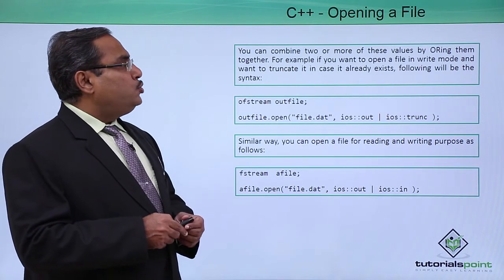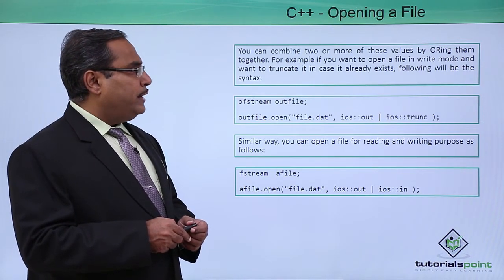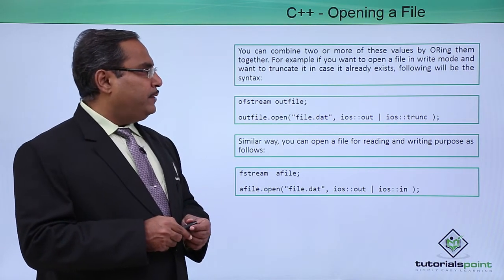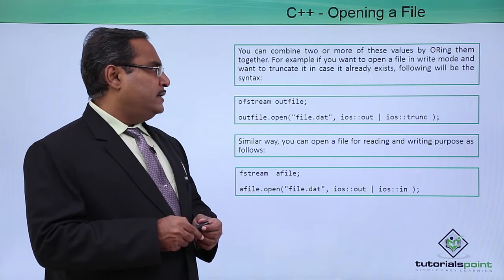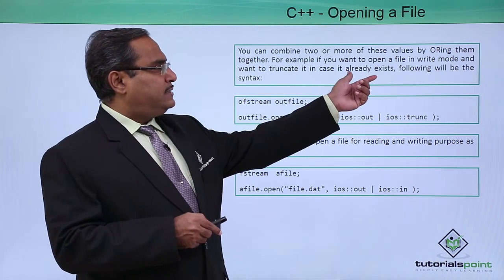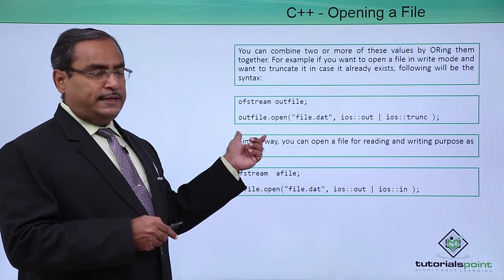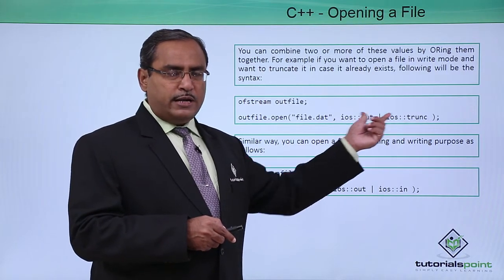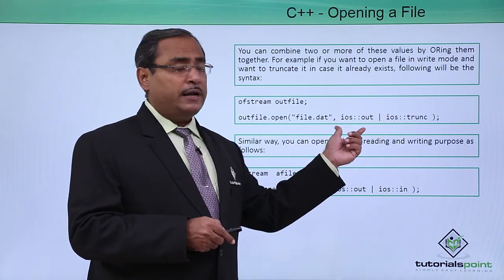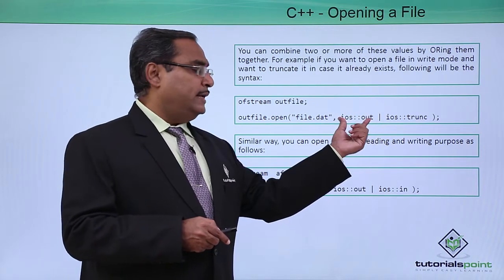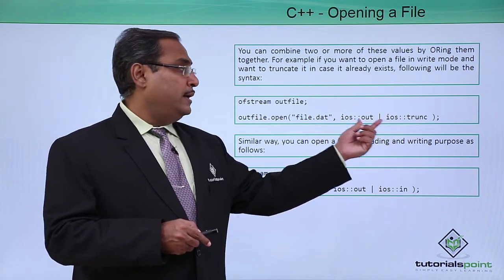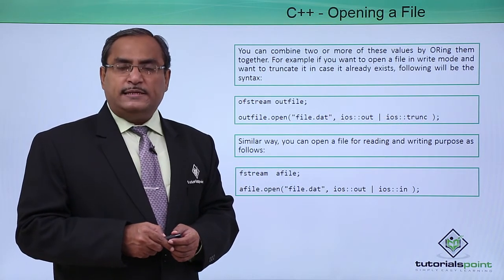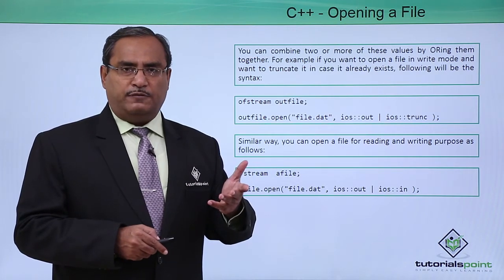You can combine two or more of these values by ORing them together. For example, if you want to open a file in write mode and want to truncate it in case it already exists, the respective syntax would place the two modes side by side separated by the OR operator — that is ios::out for output and ios::trunc to indicate that if the file pre-exists, its previous content will be truncated.